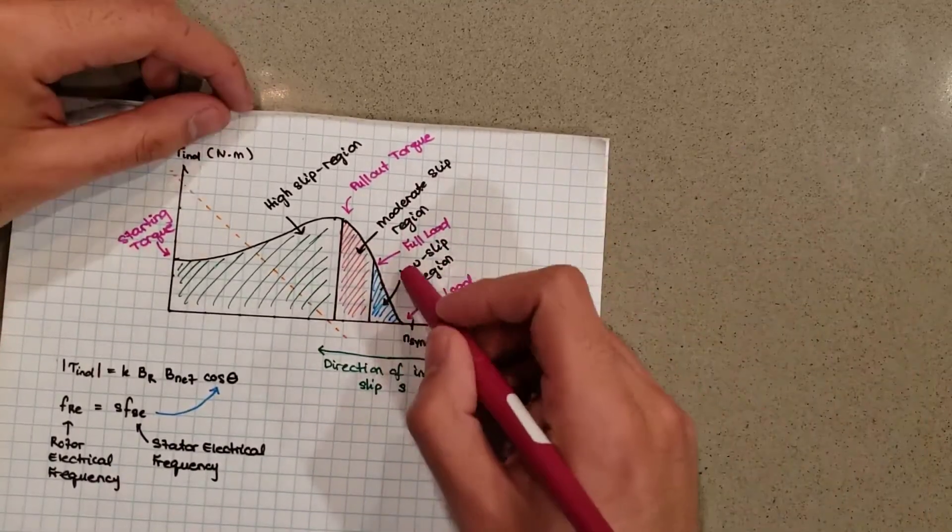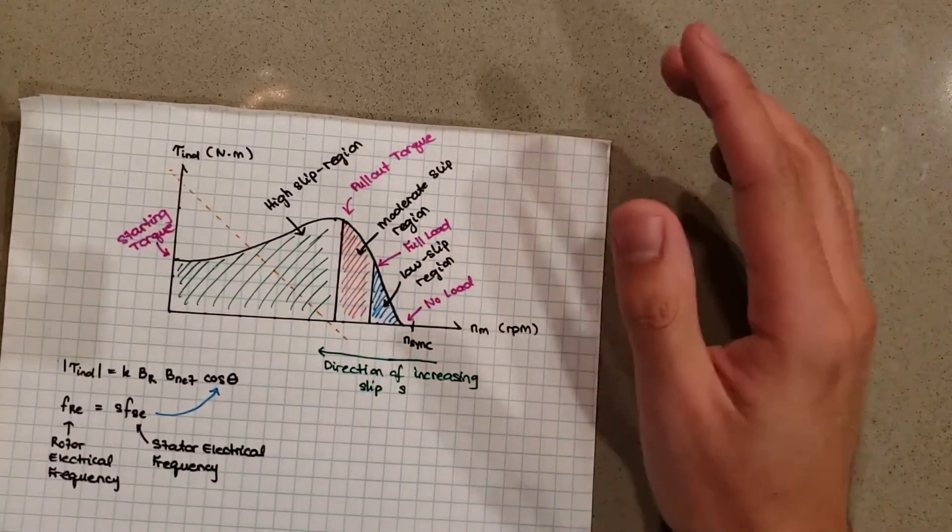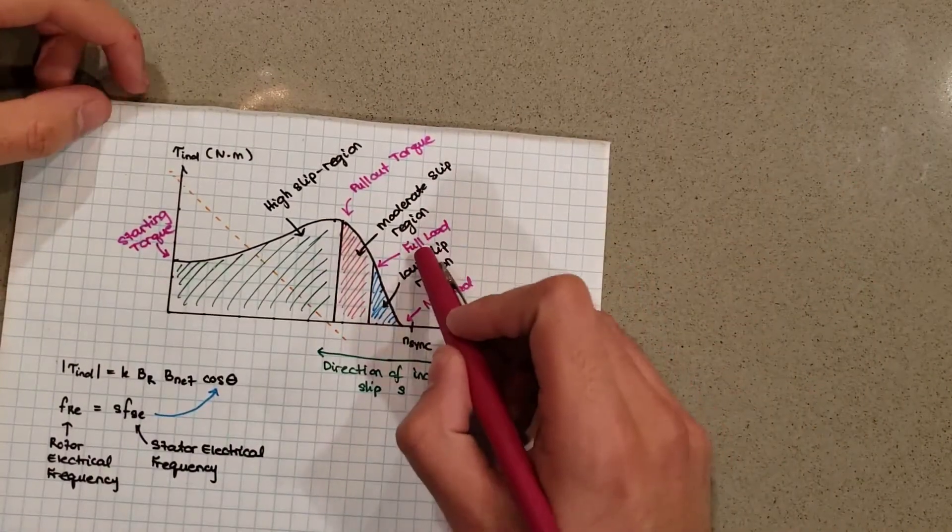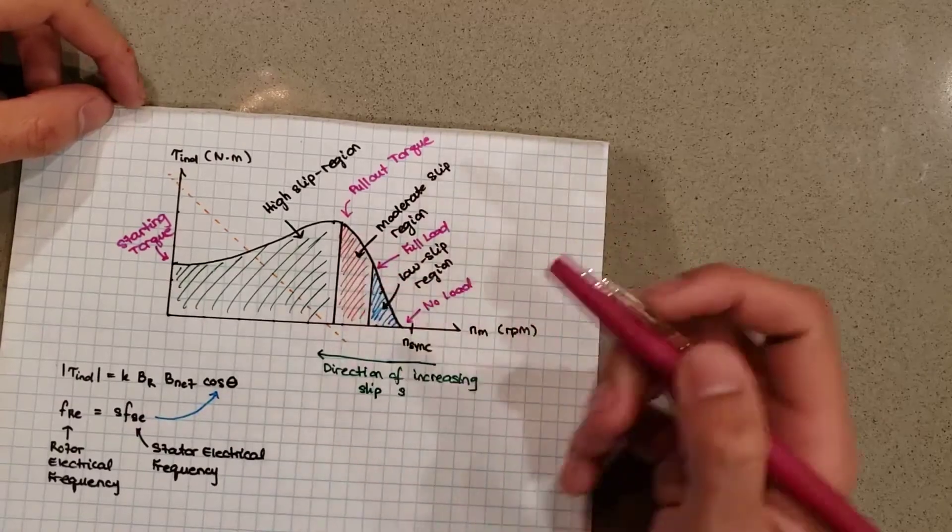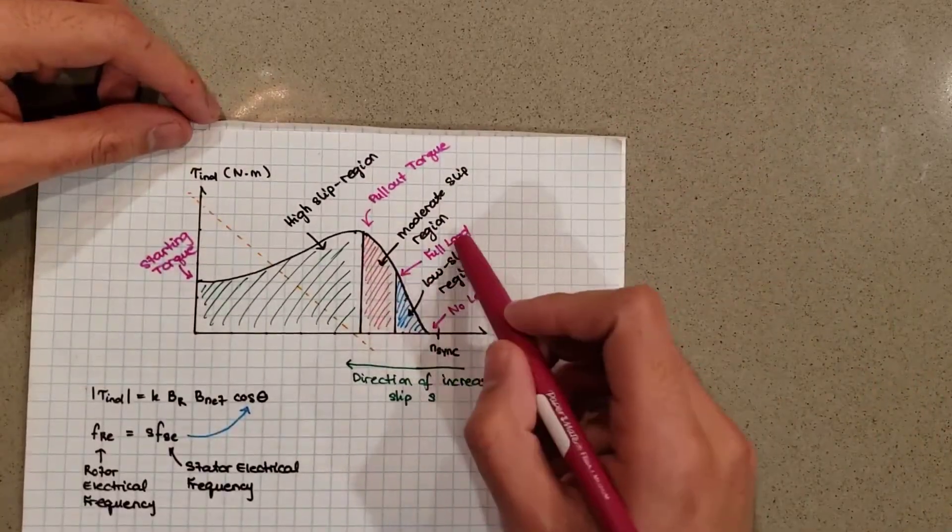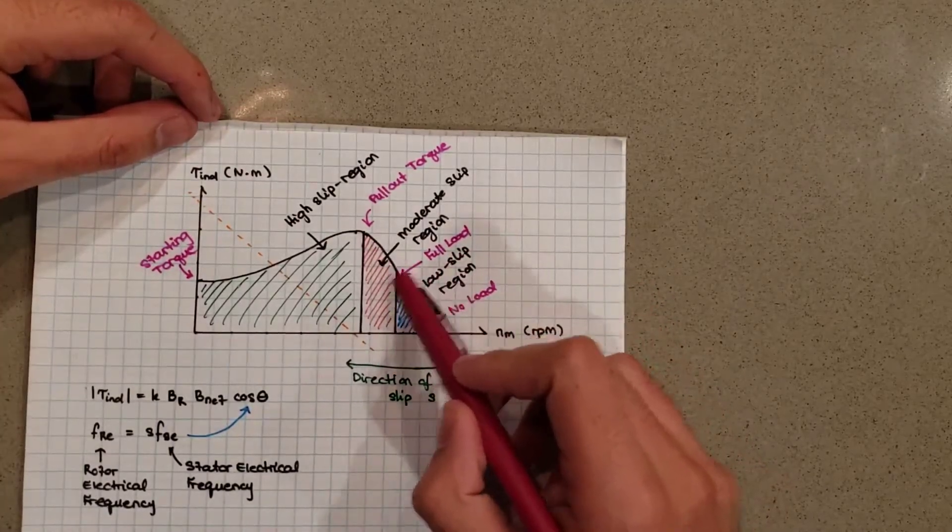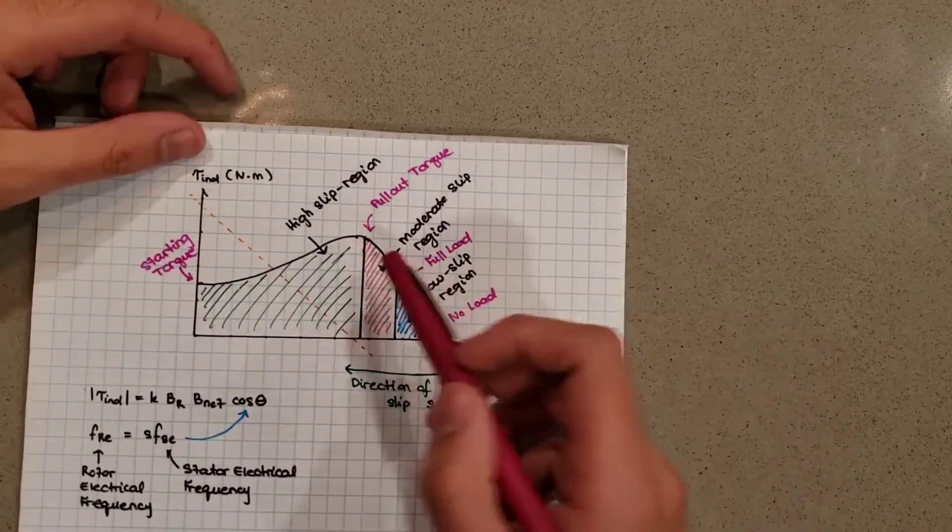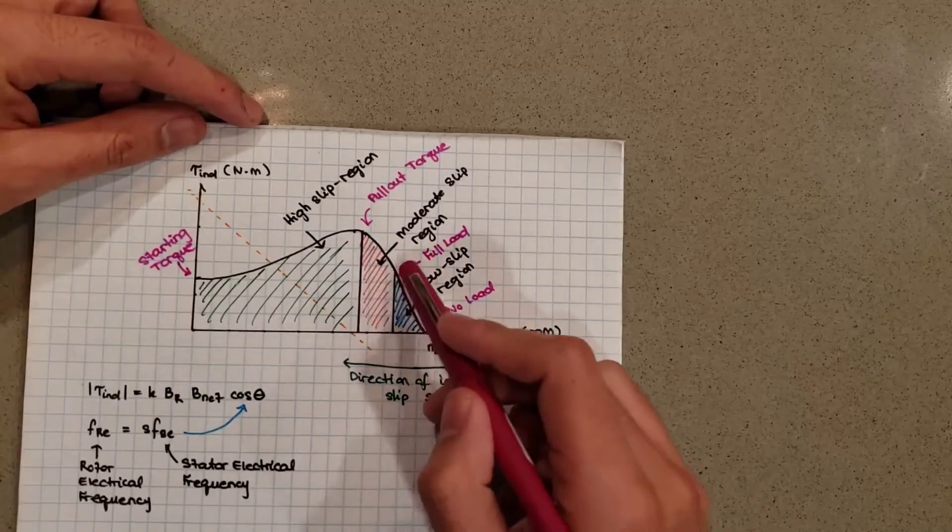So maybe it should be called rated load over here rather than full load, but anyways we usually use the term rated and full load synonymously in power systems. But don't mistake this for the maximum load your motor can take—that's not the case. This is just the rated operating condition. Now you might be wondering why is the operating condition there? Why not work when the torque is highest, for example, or maybe over here when I want the motor to spin really fast? Why is it that the full load is right there?